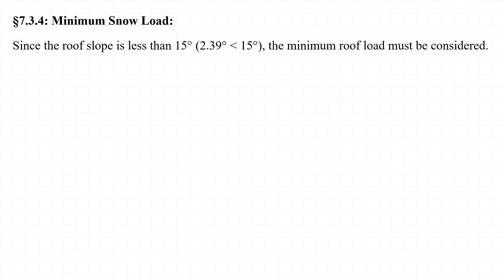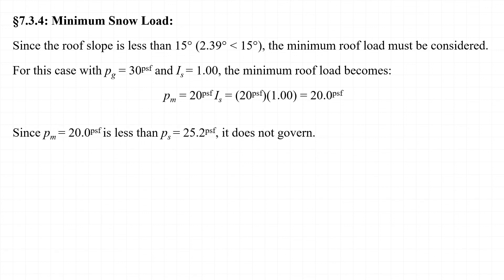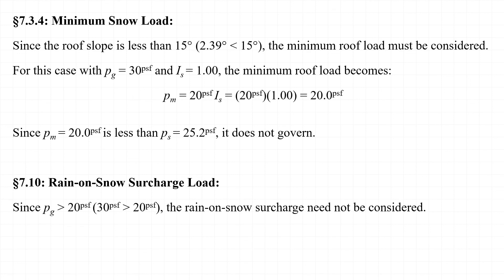Finally, since the roof slope is less than 15 degrees, we must consider the minimum snow load. With P sub G equal to 30 psf and importance factor I sub S equal to 1.0, the minimum snow load equals 20 pounds per square foot. Since this is less than the sloped roof snow load P sub S, it does not govern. With respect to rain-on-snow surcharge loading, since P sub G is greater than 20 psf, the rain-on-snow surcharge need not be considered. That wraps it up — thank you very much.